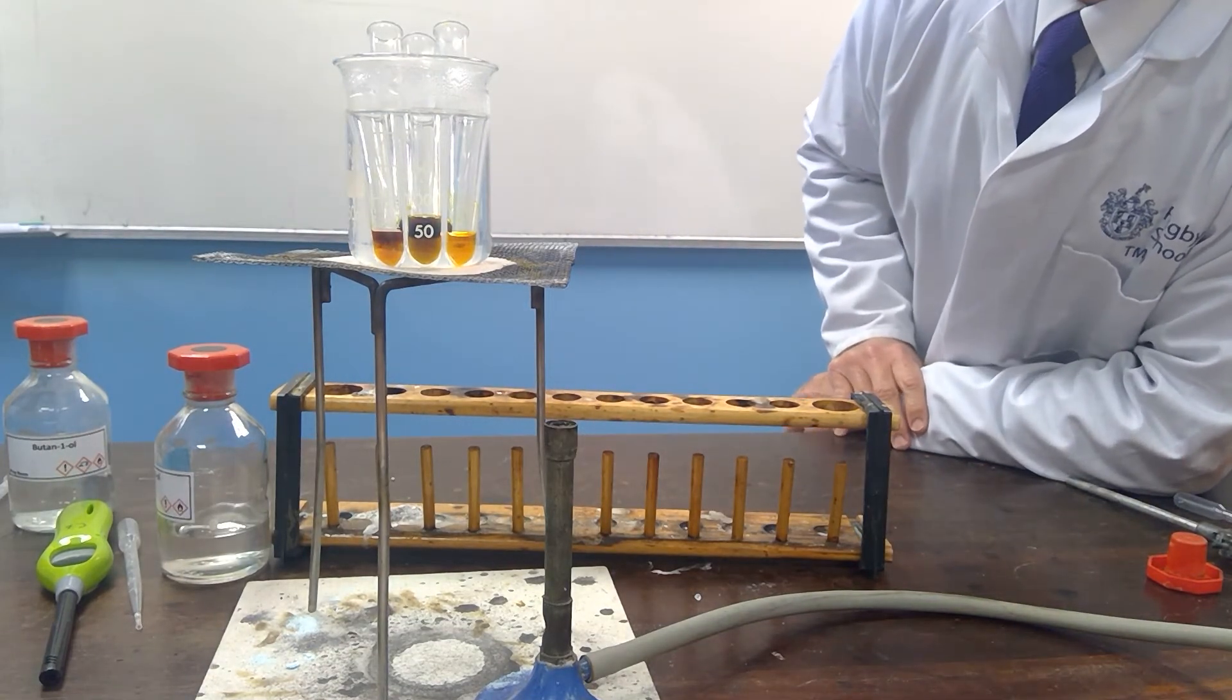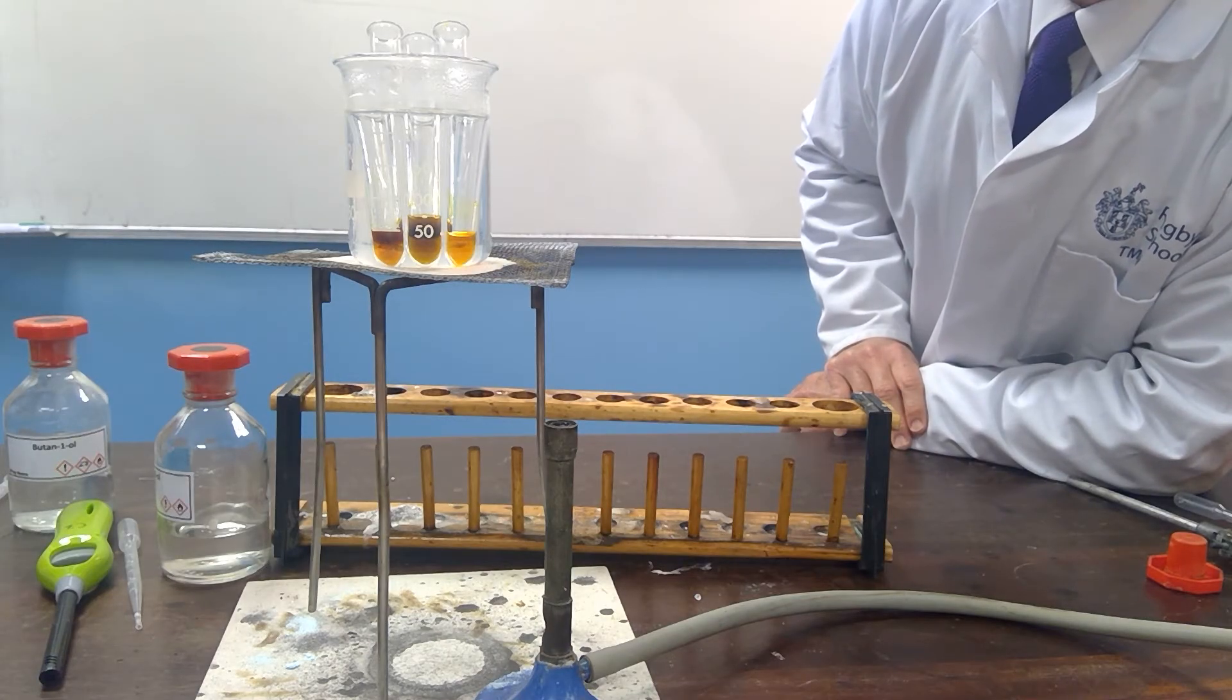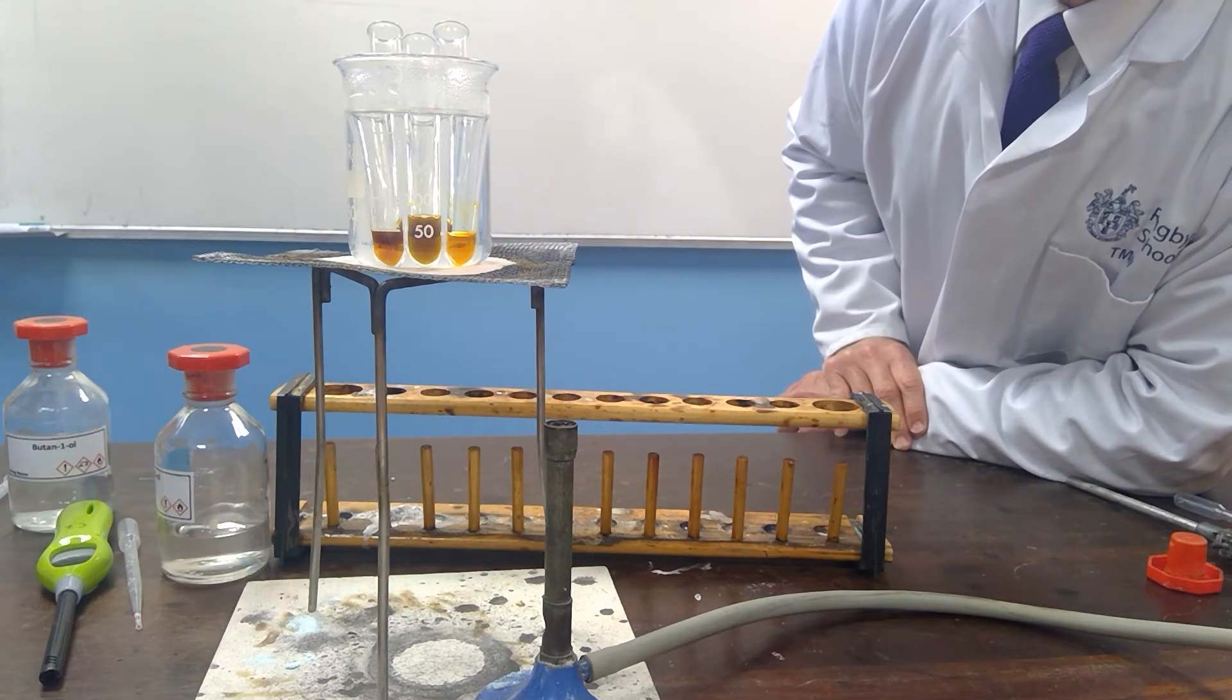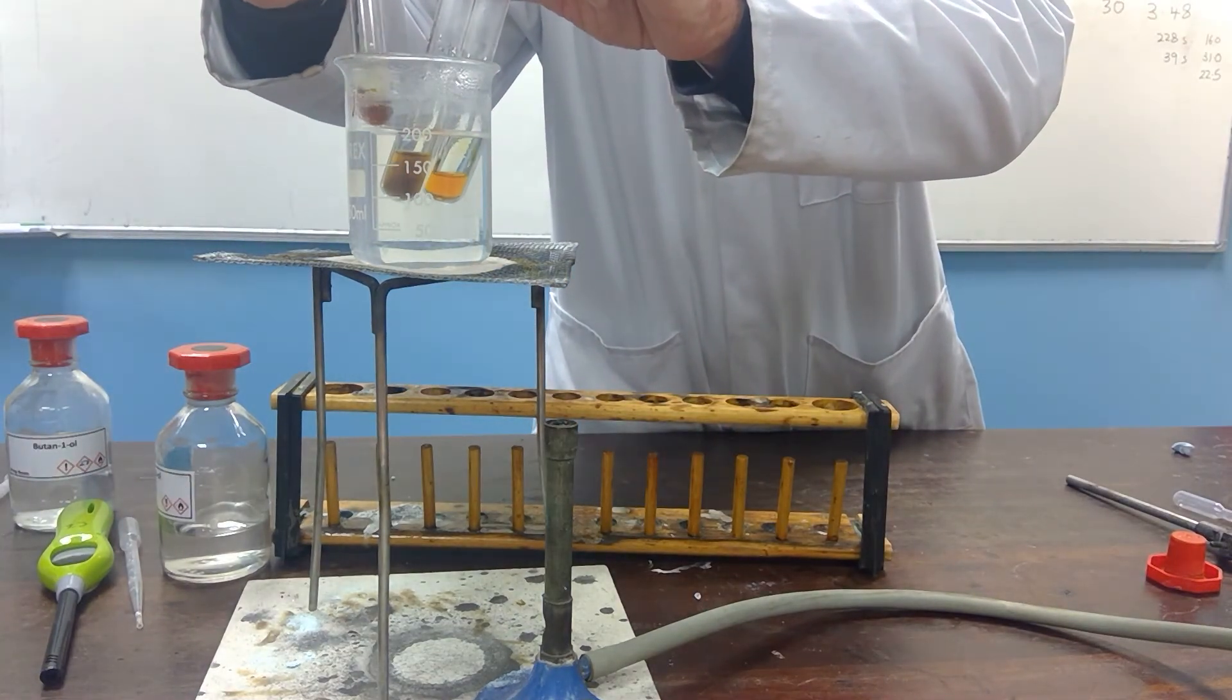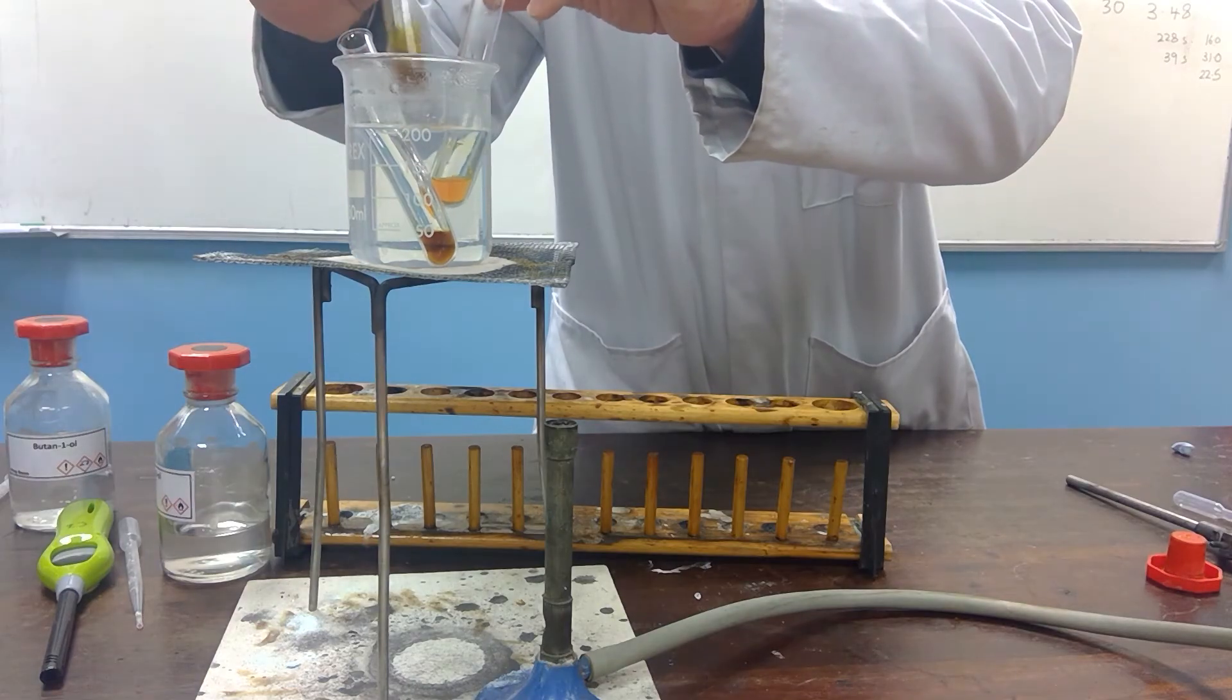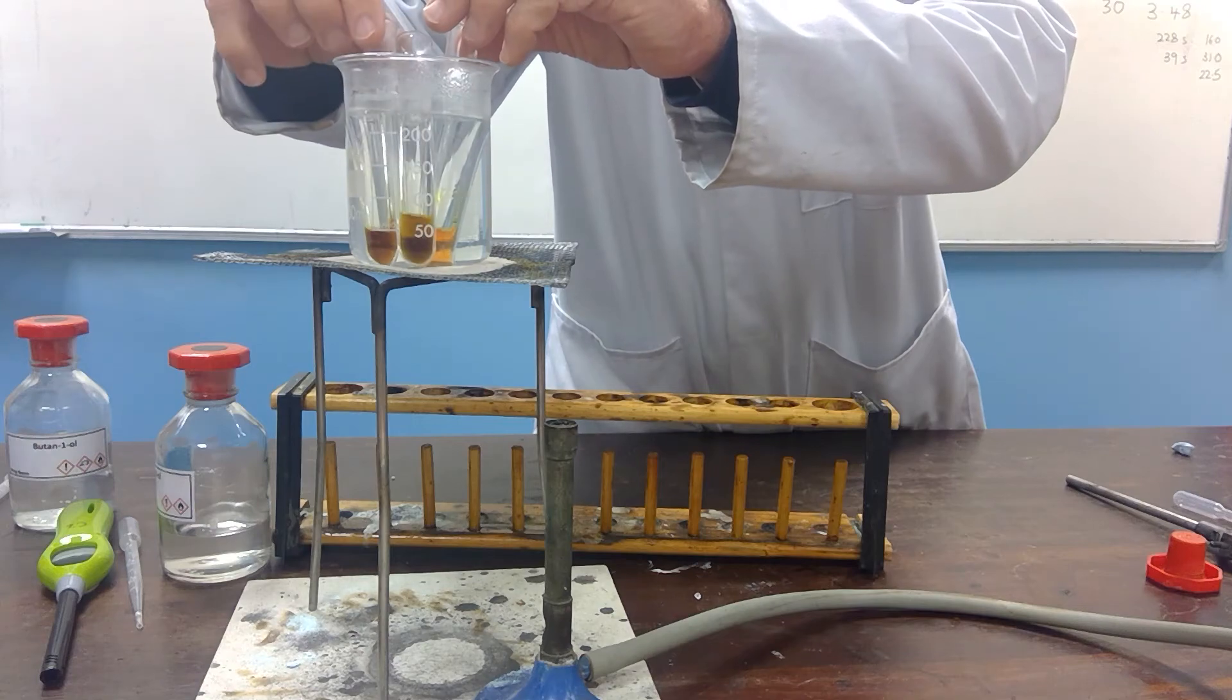So you might be able to see already that there are signs of boiling with the alcohols in the hot water bath, and there is some distinct colour change. This one, the butan-1-ol, is just starting to change. The butan-2-ol had an immediate change and is now starting to go quite nicely.